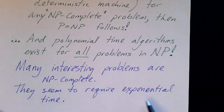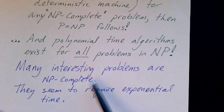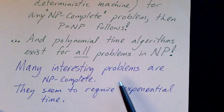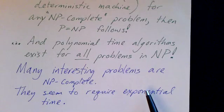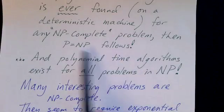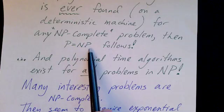It means that they seem to require exponential time to solve on a deterministic machine. And if, for any of those problems, you ever found a polynomial time algorithm on a deterministic machine, it would solve the NP problem. It would prove that P equals NP.